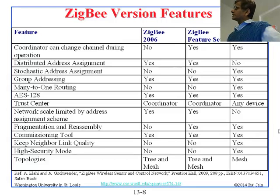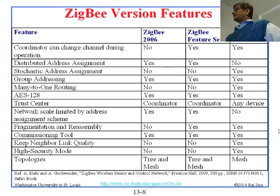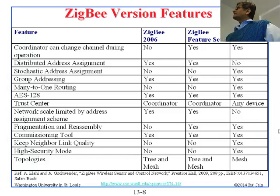In terms of topologies: the older version allows mesh, and the newer one allows trees and mesh. If it is full mesh, tree is a special case, so it's unclear why they distinguish the two — but the older one says tree and mesh, and the latest says mesh. This is the standard Zigbee feature set (2007) versus the Zigbee Pro feature set. The Pro is probably a bit higher cost compared to the standard.